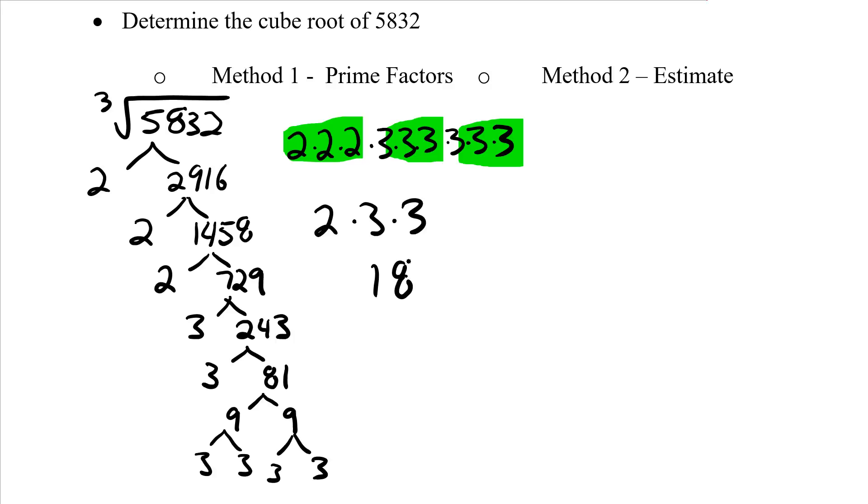Now let's try the estimation method. So again, I write out my cube root, 5,832 to the cube root. And again, let's try those base tens. 10 cubed I know is 1,000, and 20 cubed I know is 8,000. So are we closer to 10 cubed or 20 cubed? Clearly, it's closer to 20 cubed.